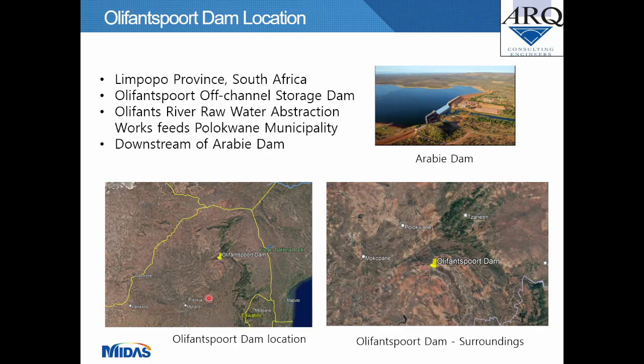The dam is an off-channel storage dam forming part of the Early Funds River raw water abstraction works, which feeds the Polokwane municipality. It is located downstream of the Arabi dam, a concrete gravity dam. Images show the dam location overlaid on a Google Maps photograph.